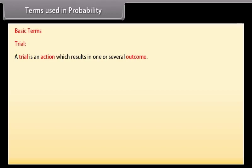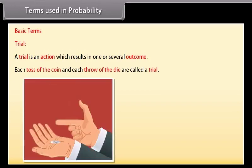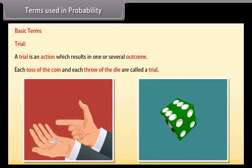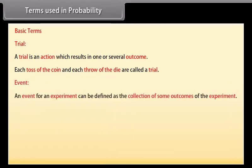Terms used in probability. Before going further, let's learn about basic terms used in probability. Trial: A trial is an action which results in one or several outcomes. For example, each toss of the coin and each throw of the dice are called a trial. Event: An event for an experiment can be defined as the collection of some outcomes of the experiment.